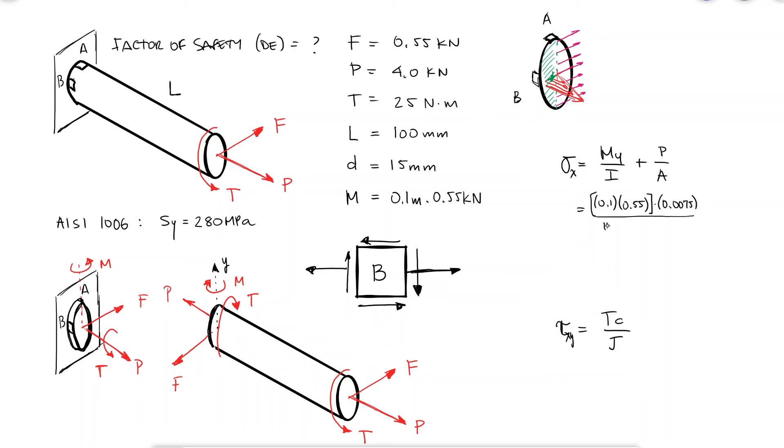The normal stresses result in 189 MPa, and the torsional shearing stress in 37.7 MPa.